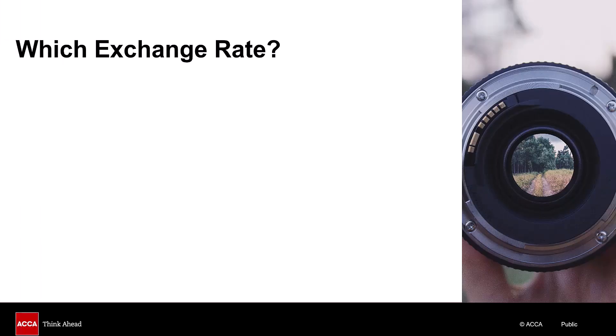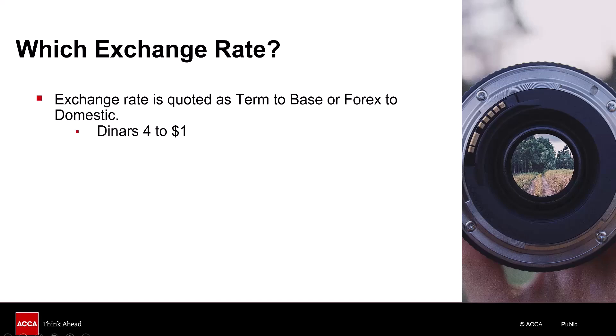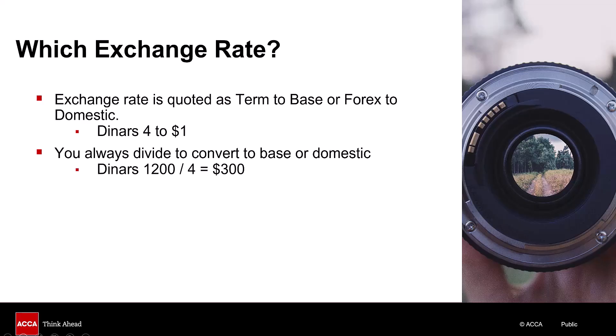Before we look at worked examples of the different hedging techniques, you need to understand which exchange rate to use, and I have a foolproof way of doing this. The exchange rate is quoted as the term to the base, or the foreign currency to the domestic currency. For example, 4 dinars to the dollar — the dinars are the term or forex currency, and the dollar is the base because it's denominated as one unit. You always divide to convert to the base or domestic currency. So 1,200 dinars divided by the exchange rate of 4 gives us 300 dollars. You always divide.